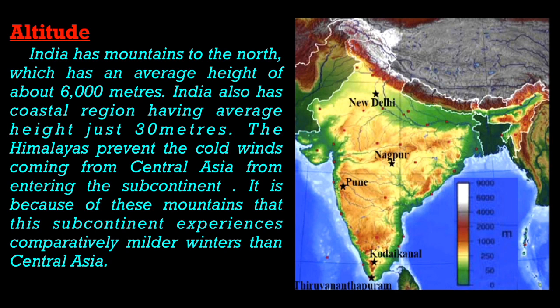Altitude: India has mountains to the north. The Himalayan mountains are present over the northern states and the northern boundary of India, including Nepal and Bhutan. Those mountains have an average height of about 6,000 meters. India also has coastal regions with an average height of just 30 meters. The Himalayas prevent cold winds coming from central Asia from entering the Indian subcontinent. Because of these mountains, the subcontinent experiences comparatively milder winters than central Asia.